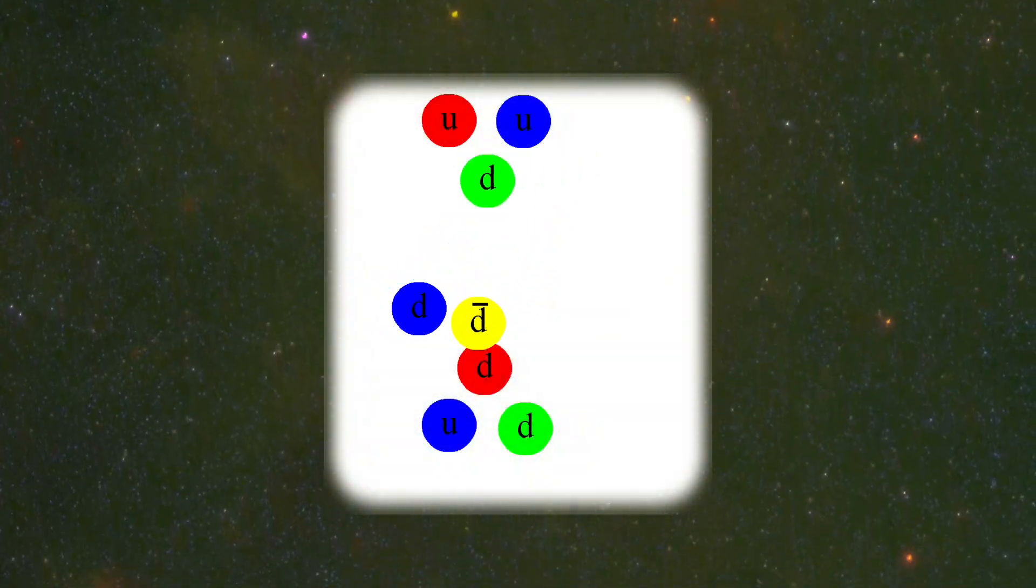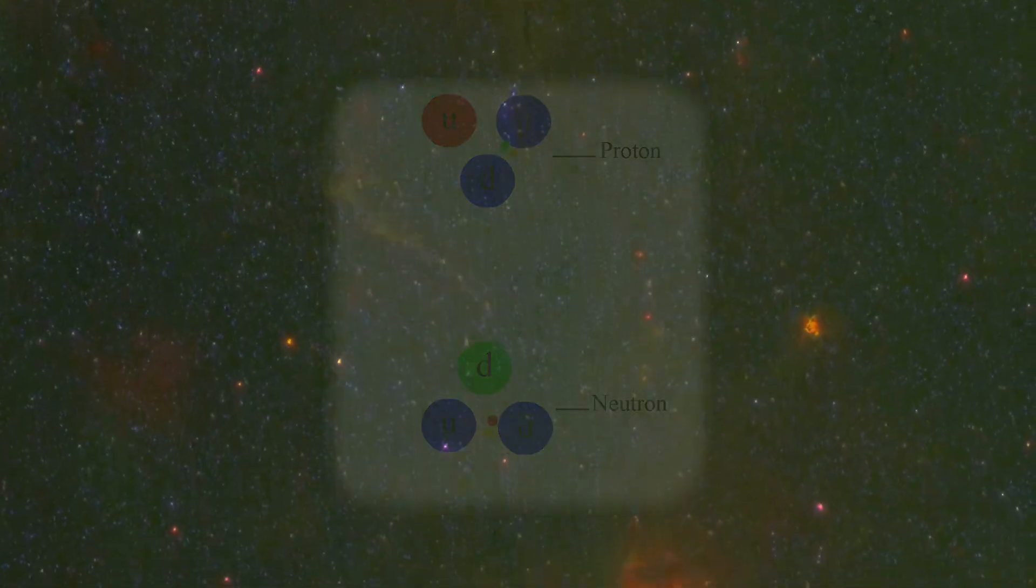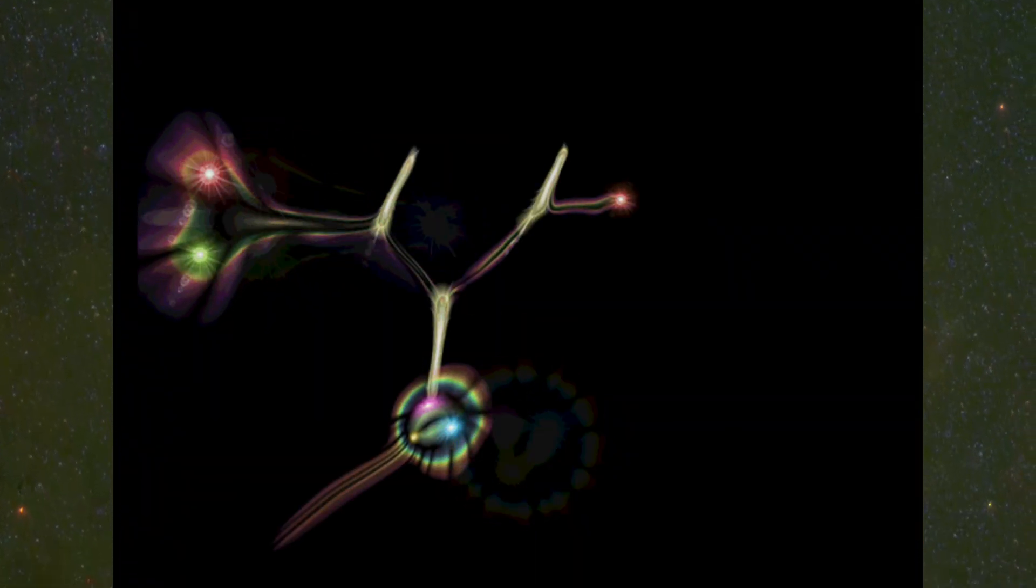Up quark and down quark are the particles that, by connecting them together using the gluon particle, they will form the protons and neutrons.